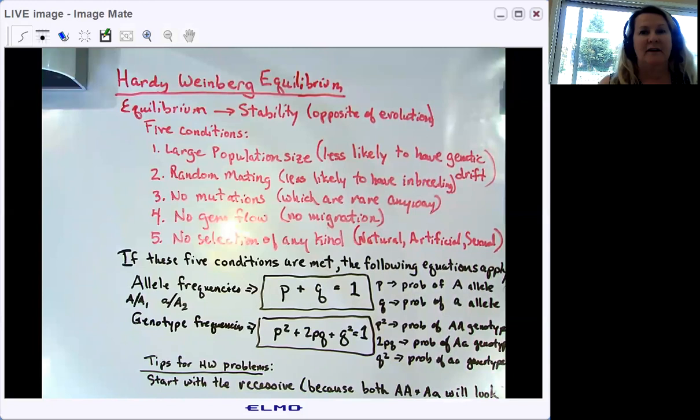I'll ask, how did you get that? They got that by multiplying the probability of getting one head, which is one half, by the probability of getting the second head, which is also one half. So the probability of getting one dominant allele is P. The probability of getting two dominant alleles at the same time is P times P. And that's where the P squared comes from.